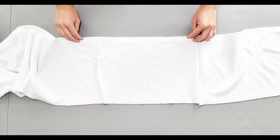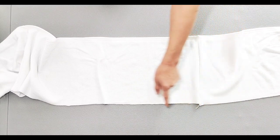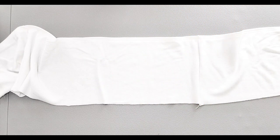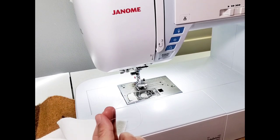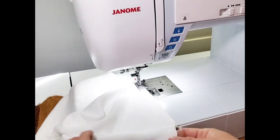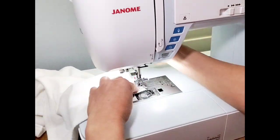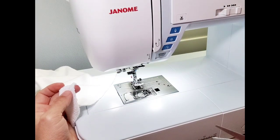Now that I've hemmed the bottom of my skirt, I'm going to baste all along the top so that I can gather it to fit the bodice. I've pulled up my bobbin thread so I start sewing with some tails. And leave yourself some tails at the end as well.